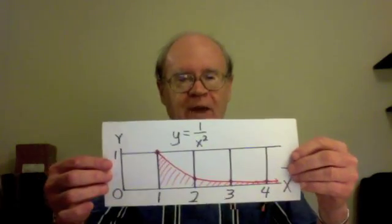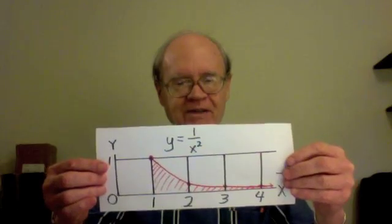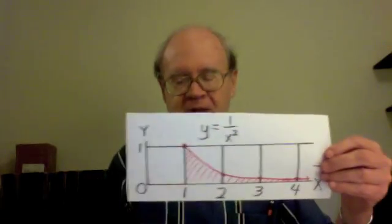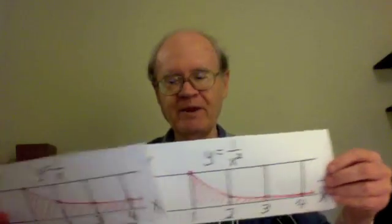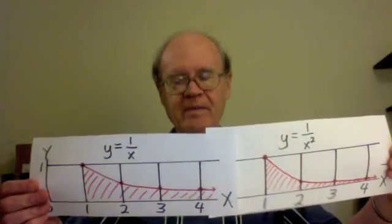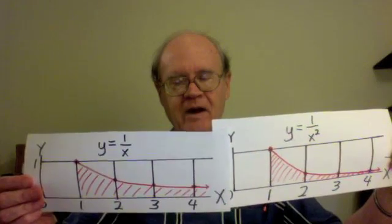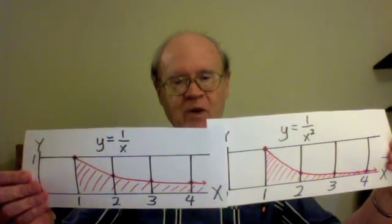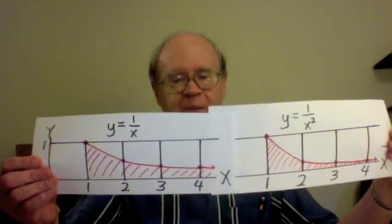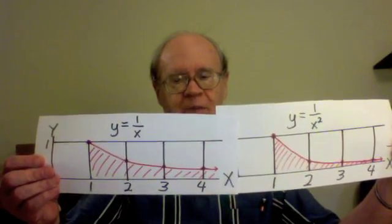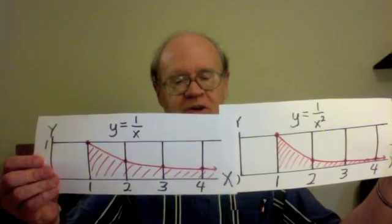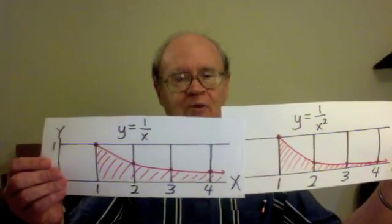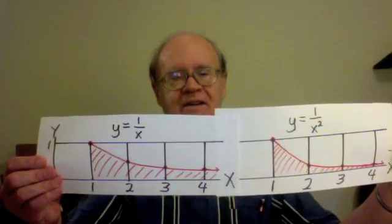There is that shaded area. Now the purpose of this video, the main purpose, is to compare these two areas. As we've seen, they have quite a bit in common. They have, as their left boundary, the vertical line at 1, upper boundary is the curve itself, lower boundary the x-axis, but no right boundary. They both go indefinitely to the right.